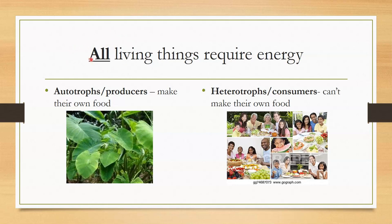All living things require energy. Let's start with the autotrophs, or producers. Autotrophs are often called producers because they can make their own food. They're able to do this by taking in sunlight, carbon dioxide, and water through the process of photosynthesis in order to make glucose and other sugars. Examples include a variety of plants as well as certain bacteria, which also use this process to make food. It's important to note that producers are the foundation of any food chain or food web.